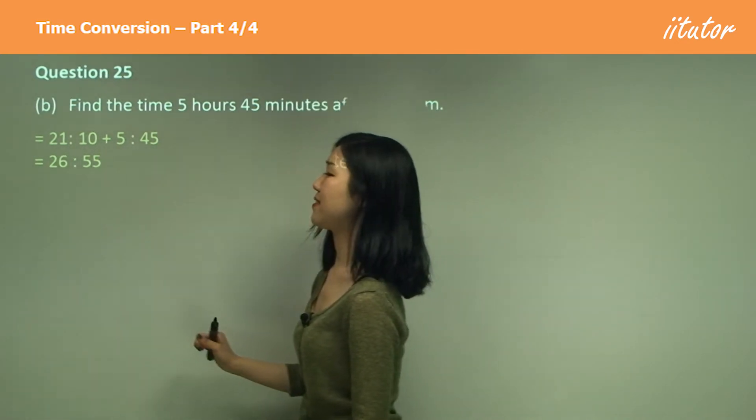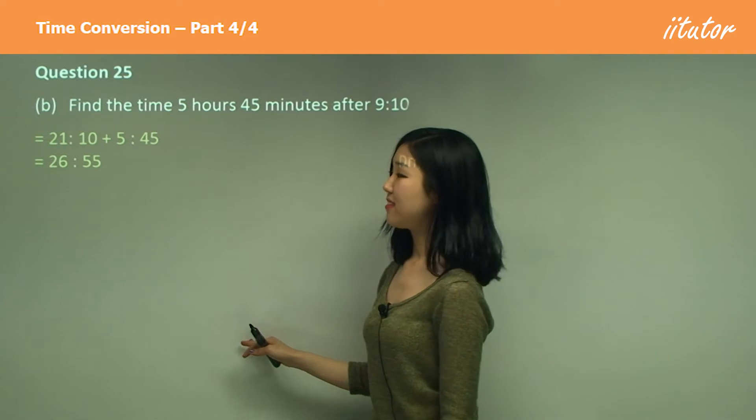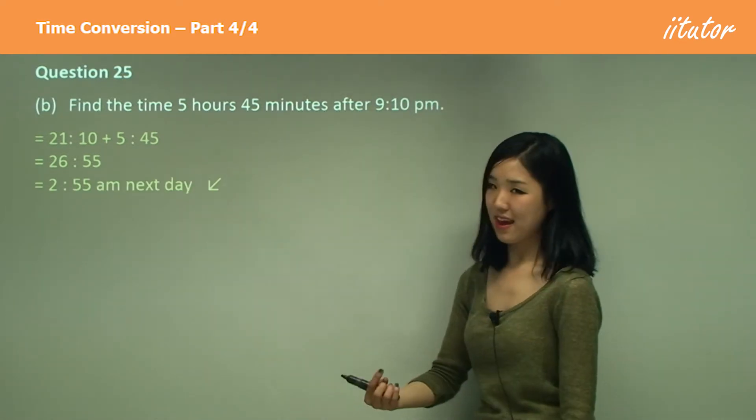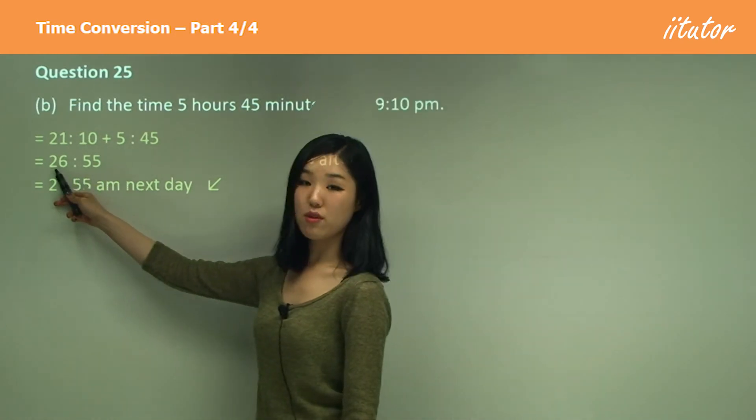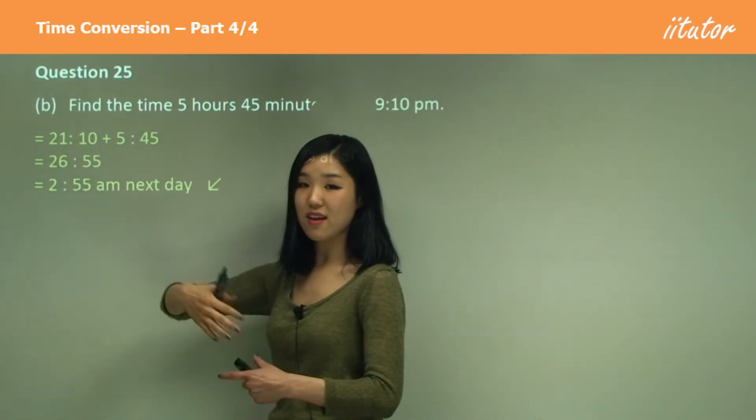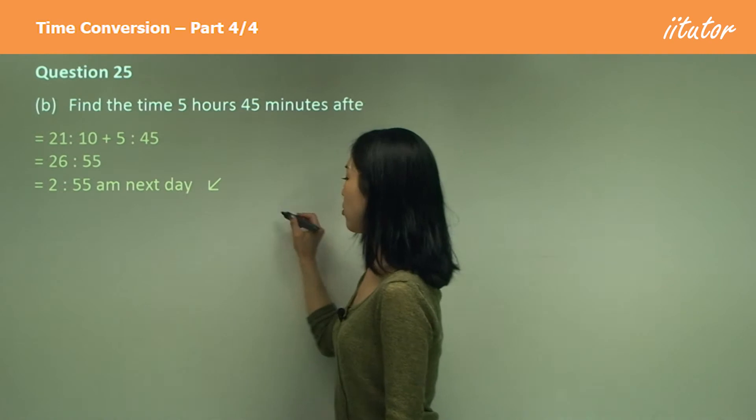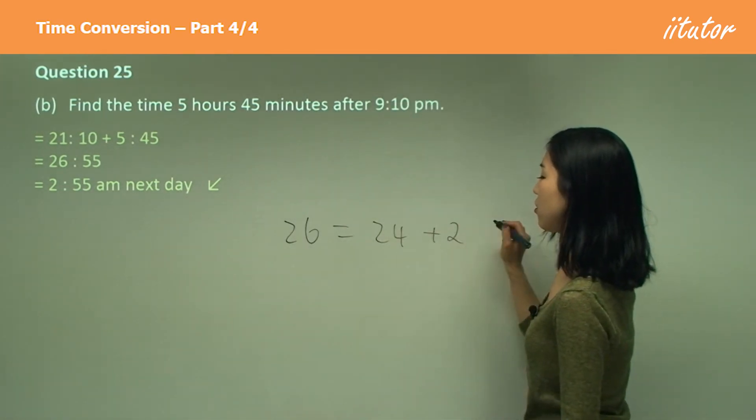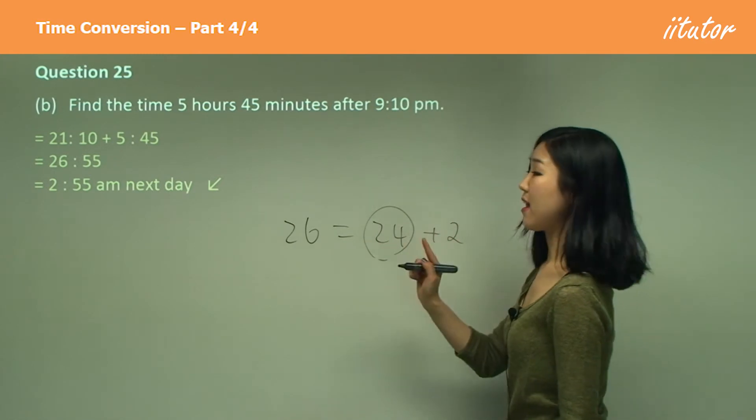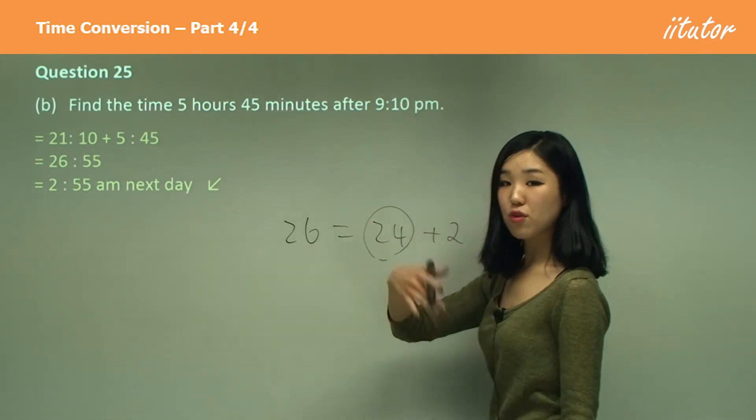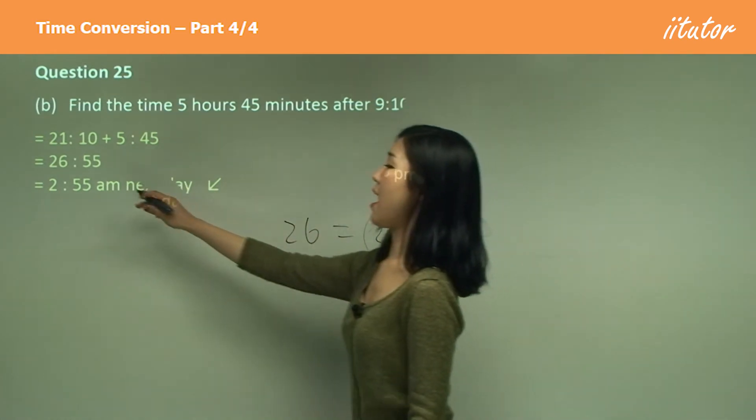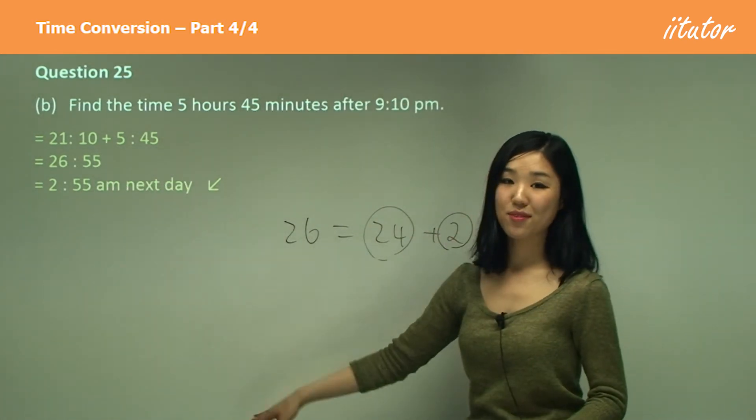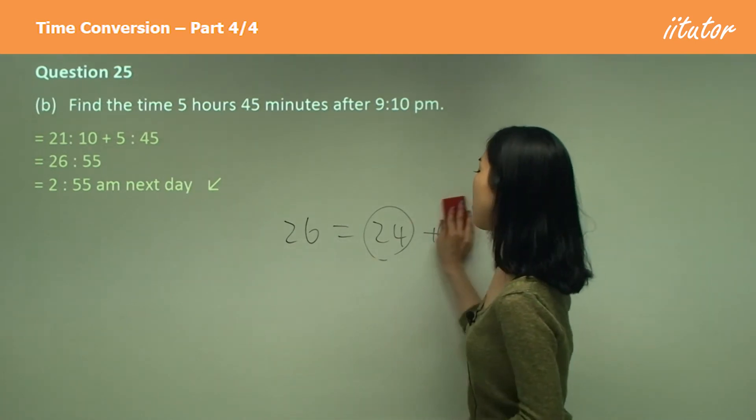21 plus 5 is 26. And 26, that is 2:55 a.m. the next day. Because that exceeds 24 hours, which means that exceeds a whole day. So because 26 is 24 plus 2, 24 is one day. So the next day after another day, it's 2 hours and 55. So 2:55 a.m. the next day, because a whole day has been passed.